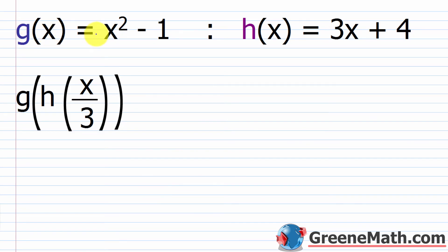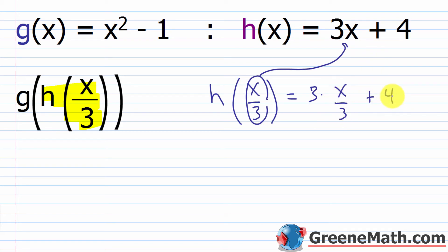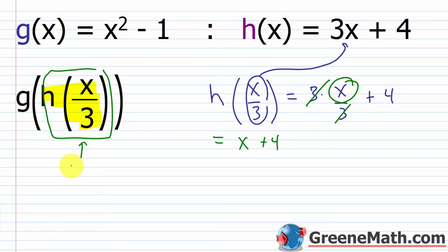For the next one, we have g of x equals x squared minus 1, and h of x equals 3x plus 4. We're trying to find g of h of x over 3. Again, I start with the inside: h of x over 3. I plug x over 3 in for x in h of x. So I'd have 3 multiplied by x over 3, then plus 4. The 3s cancel, and I'm left with x plus 4. So h of x over 3 equals x plus 4.